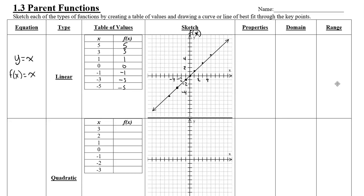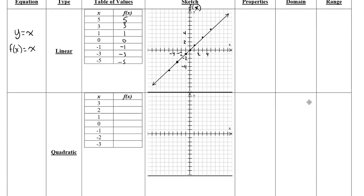The next function we're going to look at is the quadratic function. In the past we've seen it as y equals x squared; now we see it as f of x equals x squared. We're going to graph the parent function. We know that if x is 3, then 3 squared gives you 9; if x is 2, then 2 squared gives you 4; 1 squared gives you 1; 0 squared gives you 0. And then 3 and 9 is right there on the graph.